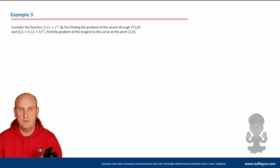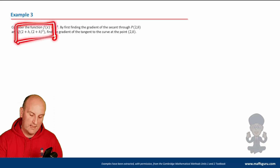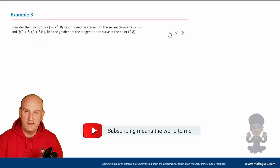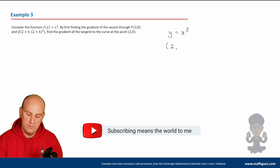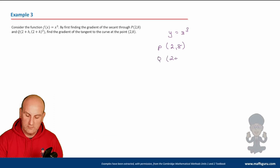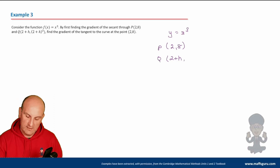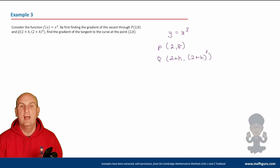Another example: consider f(x) = x³. Find the gradient of the secant through (2, 8) and the point Q. The coordinate (2, 8) is P because when x = 2, x³ = 8. Q is at (2 + H, (2 + H)³). Now find the gradient of the tangent at the point (2, 8).